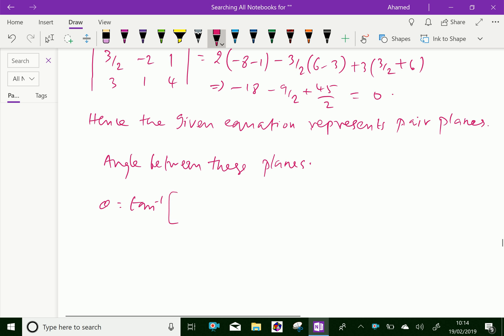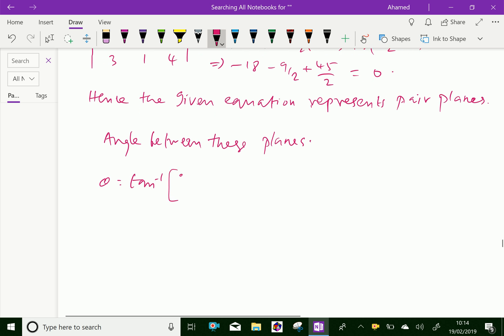That is 2√(f² + g² + h² - bc - ca - ab) over (a + b + c).